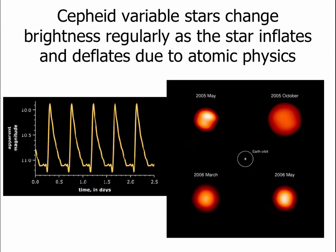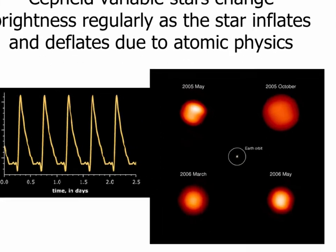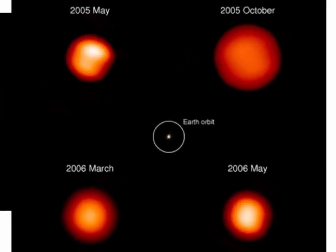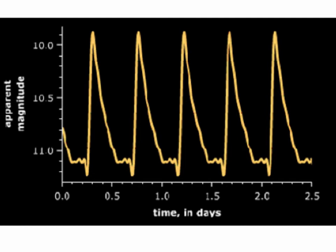The reason for this pulsation goes to atomic physics. On the right you can see a picture of one of the few stars where we can actually see its size, and you can see that over about a year this star changed its size dramatically — starting off small in May of 2005, growing very large by October of 2005, and shrinking again by May of the following year. On the left we have a plot of the apparent magnitude of a star over time, and you see that this star gets bright and then fades away very regularly — it gets bright quickly, more slowly fades off — and this particular star goes through one complete cycle in about 12 hours.